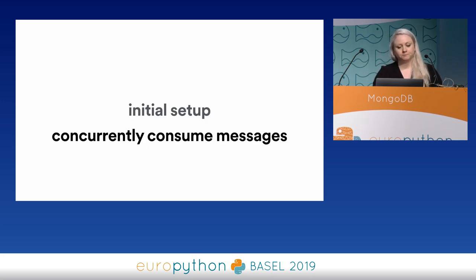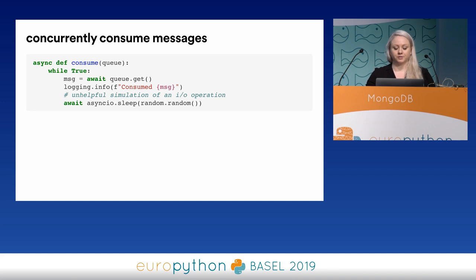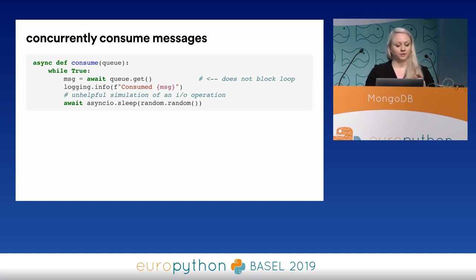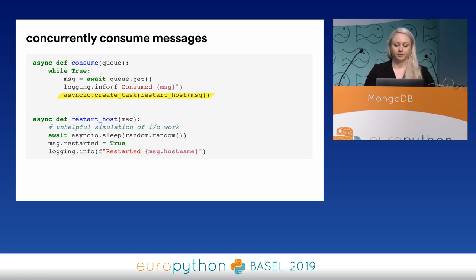So we have a publisher coroutine function, and now we need a similar consumer. This consumer will consume the messages we've published — similar to the publisher with a while true loop — but here we await on the queue for a message. We don't want to create a task of queue.get because it makes sense to block the rest of the coroutine if there are no messages to consume. Importantly, we're only blocking within the scope of the consume coroutine — we're not blocking the actual event loop. So we'll replace asyncio.sleep with a function that will restart a host, creating a task out of it so we're not blocking on awaiting for more messages.